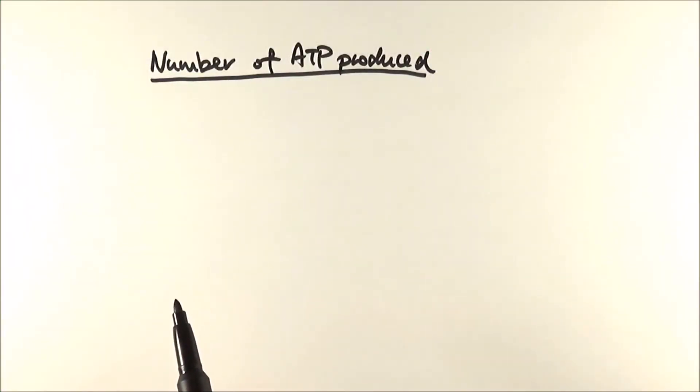After looking at the whole respiration biochemical process, we need to consider how many ATP is being produced from one glucose molecule. So what we need to do here is to look back at the three different processes and consider what's being made.